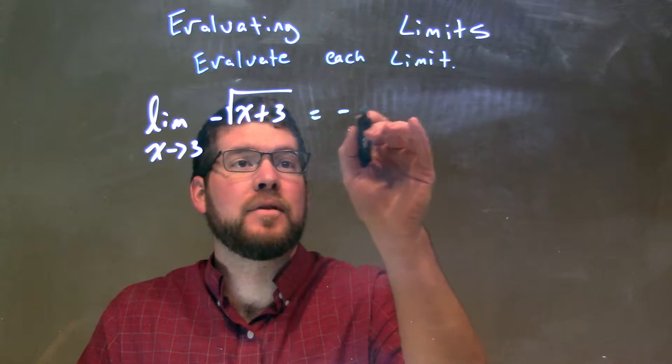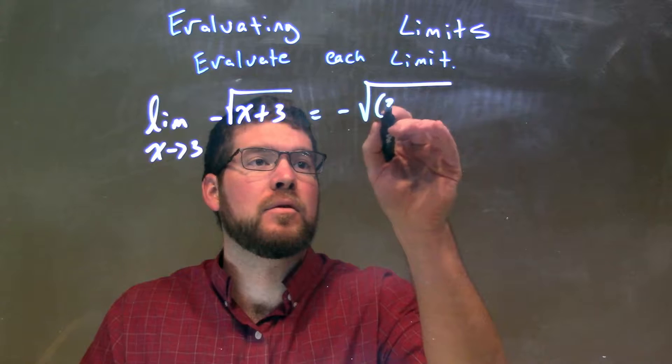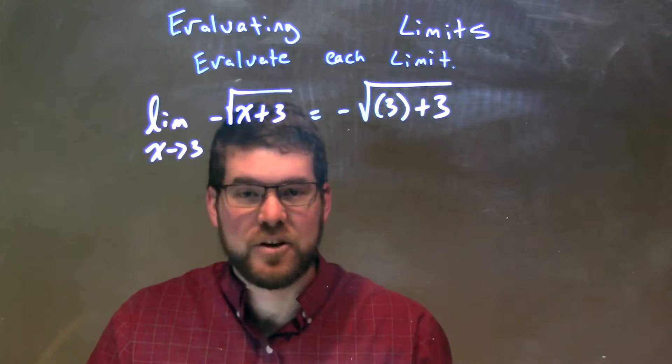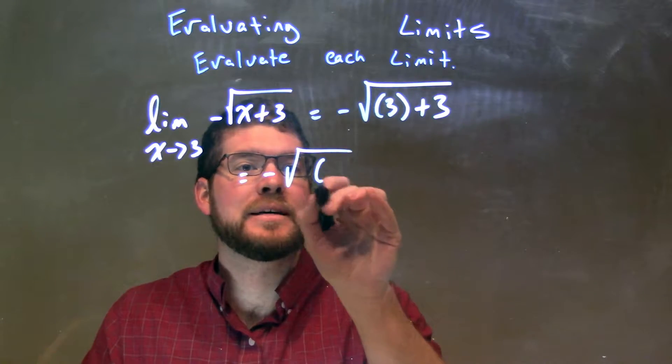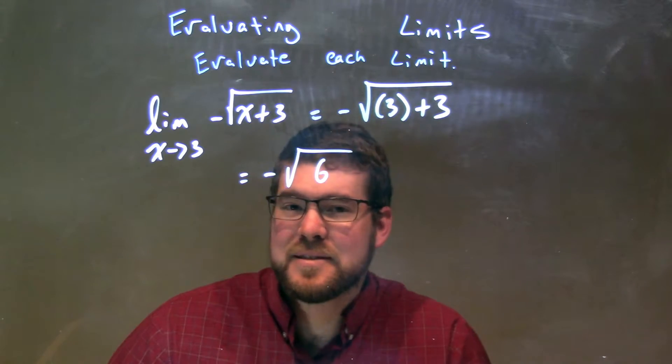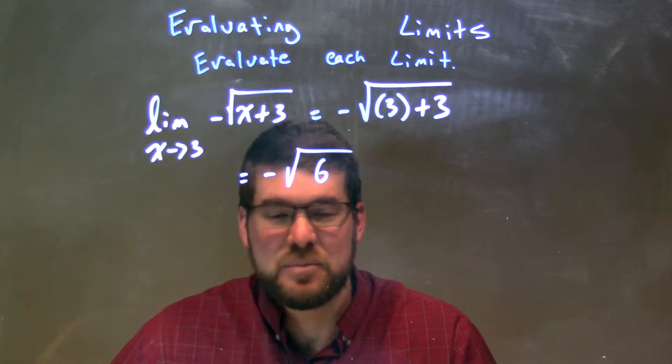So let's do that. We have a negative out front, square root of 3 plus 3. Well, like I just said, 3 plus 3 is 6, we have negative square root of 6. And at this point, I think it's simplest as it is.